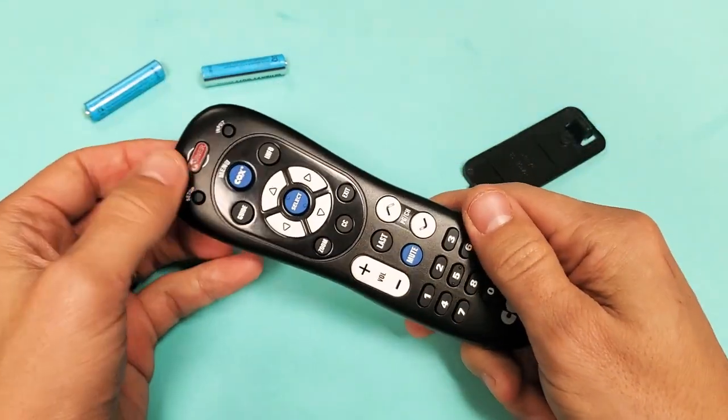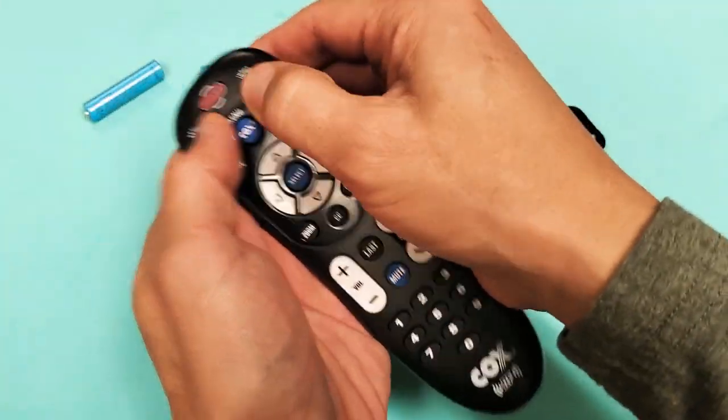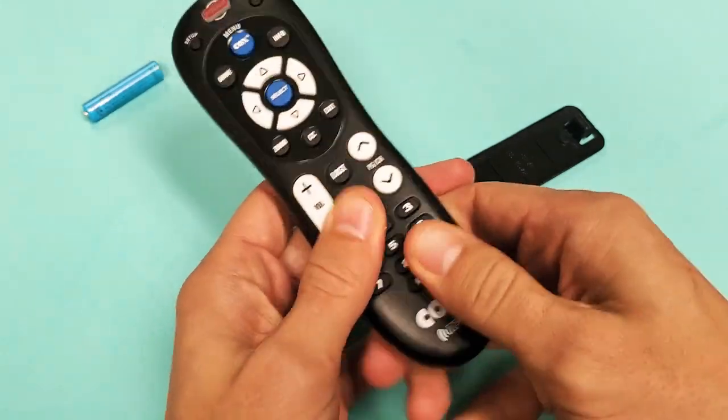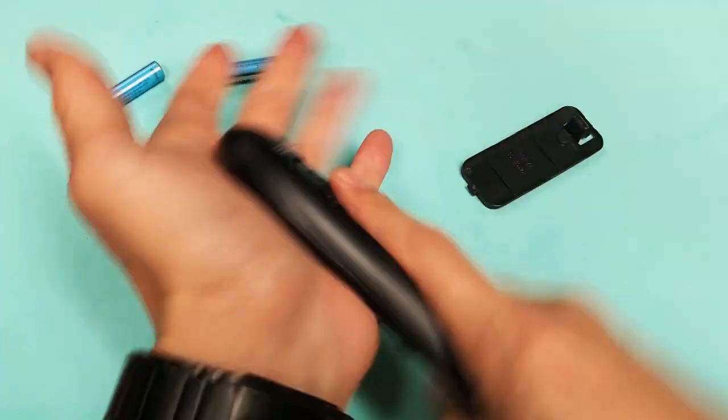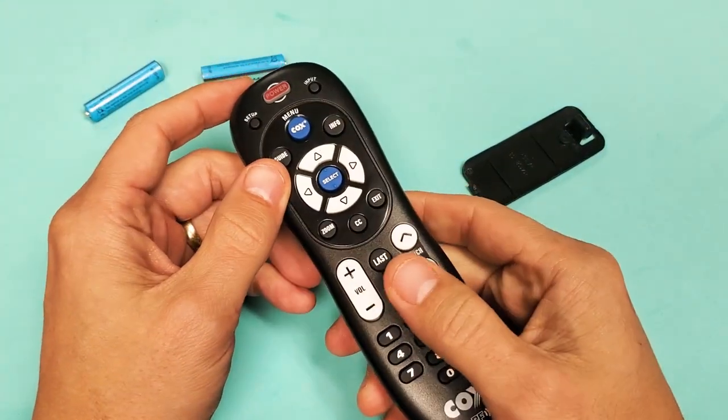Take out the batteries again, press and hold the power button for 30 seconds. After 30 seconds is up, let go, and then press every single button on here. Just go crazy. Give it a couple of smacks, get that dust and debris out. Pop the batteries in and give it a try again.